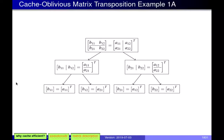Here is a simple example illustrating how the matrix transposition algorithm works with a 2×2 matrix. Since the matrix is square, we can arbitrarily split along rows or columns — in this case along the horizontal line shown. Correspondingly, B must be split in the opposite direction since it's the transpose of A. After this split, the top row of B and left column of A go into the left sub-problem, and the bottom row of B and right column of A go into the right sub-problem, then the process repeats.